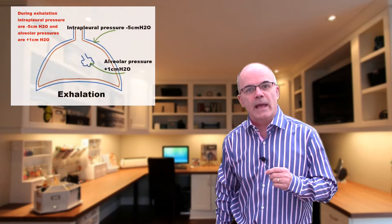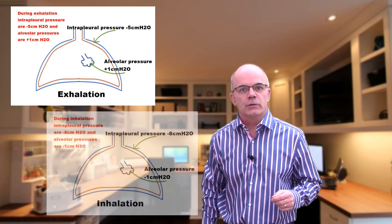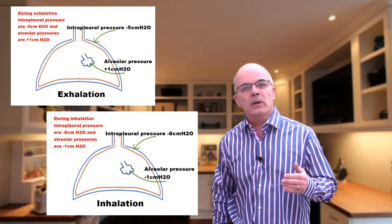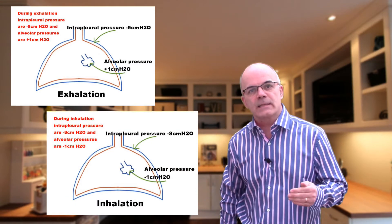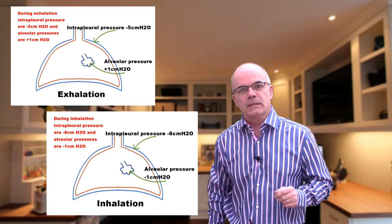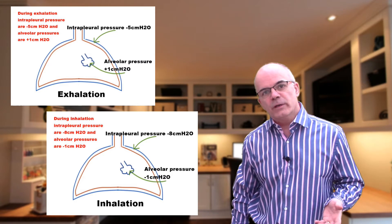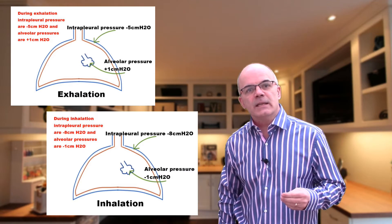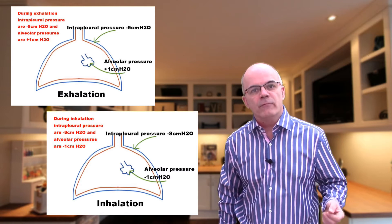During normal spontaneous breathing, intrathoracic pressure is negative throughout the ventilatory cycle. Intrapleural pressure varies from about minus 5 cm of water during exhalation to minus 8 cm of water during inhalation. Alveolar pressure fluctuates from plus 1 cm of water during exhalation to minus 1 cm of water during inhalation. This decrease in intrapleural pressure during inhalation facilitates both lung inflation and venous return.